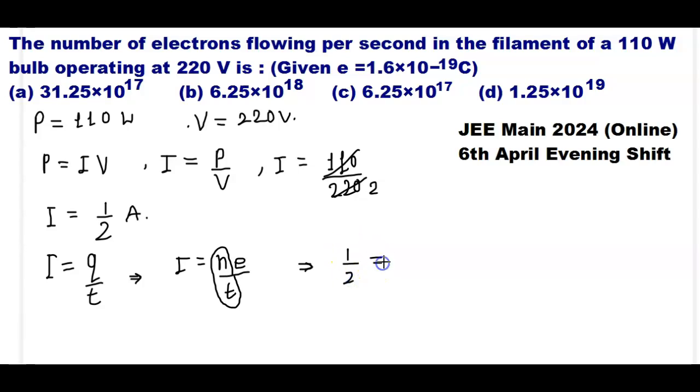1 by 2 is equal to n by t into charge of electron, and the charge of electron value is 1.6 into 10 to the power minus 19.